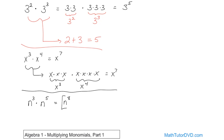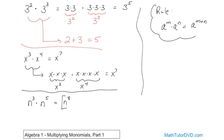You might see something in your book like a rule: a to the m power times a to the n power is equal to a to the m plus n. A lot of students look at this and don't know what to make of it. But really, all it's saying is that the bases have to match — that's why a is the same — and then you take the two exponents and add them together.